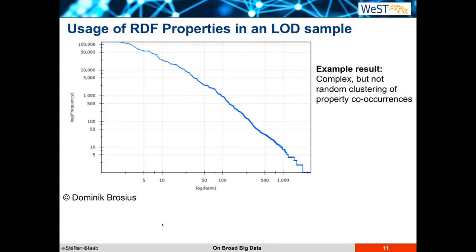We have also analyzed the occurrence of properties, here again on a sample of some thousands of properties. There are a few properties which occur hundreds of thousands of times in this small data sample, while the majority of properties occur only about five or ten times. We see from this example that the combination of properties — which properties co-occur with other properties — is not random, but neither is it very easy to decipher. When you ask where to find properties and where to find joint occasions for property combinations, you have to come up with new means to do so.